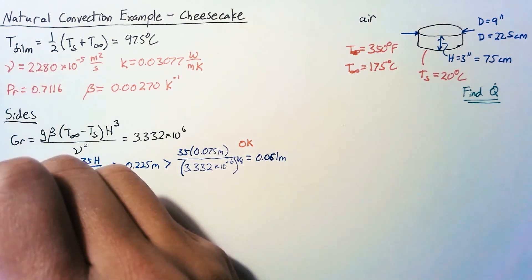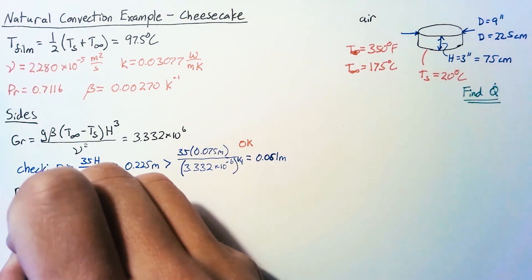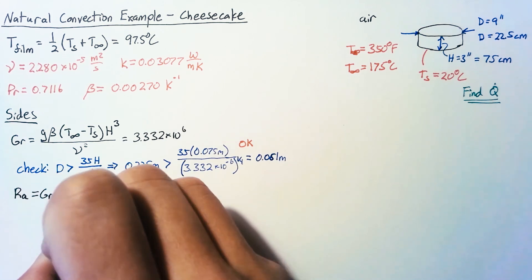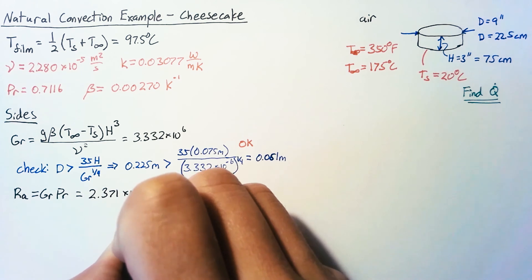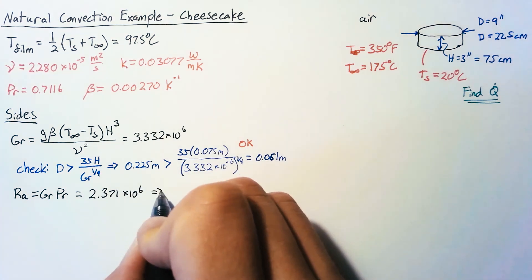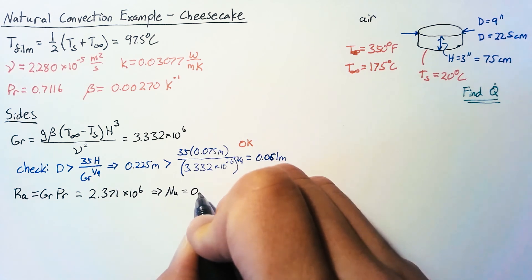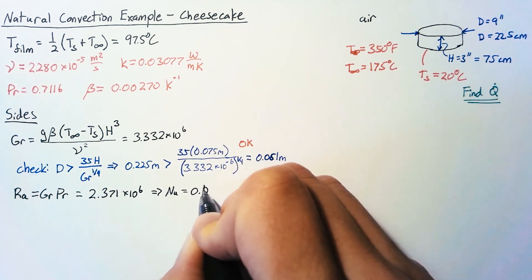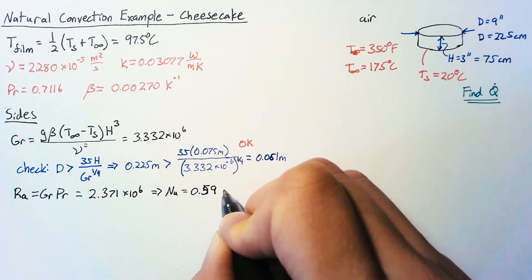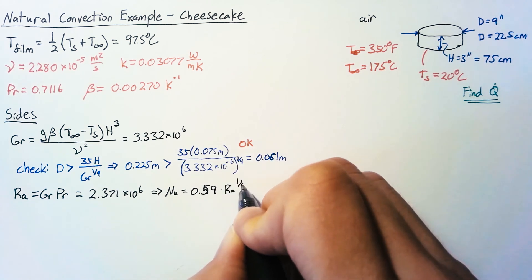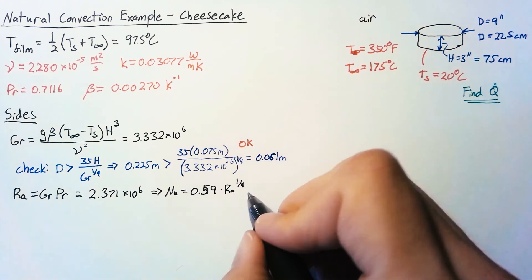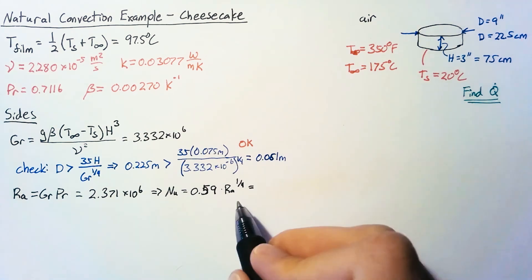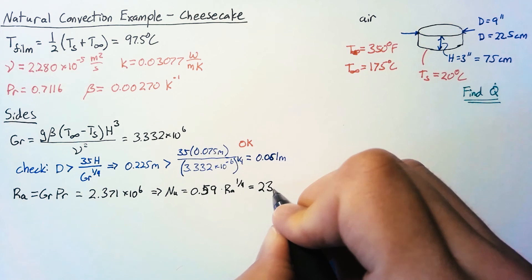So our next step is to calculate the Rayleigh number which is just Grashof times the Prandtl number and that ends up being 2.371 times 10 to the sixth which we can then use to find the Nusselt number and the equation that we will use is 0.59 times the Rayleigh number to the one fourth power. We could use that big long one but it's a lot easier and quicker to use this value and they're only a few percent off max. So this value if we plug everything in ends up being 23.2.